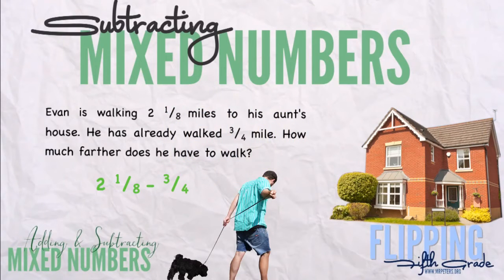Okay, subtracting mixed numbers. Evan is walking two and one-eighth miles to his aunt's house. He has already walked three-fourths miles. How much farther does he have to walk?